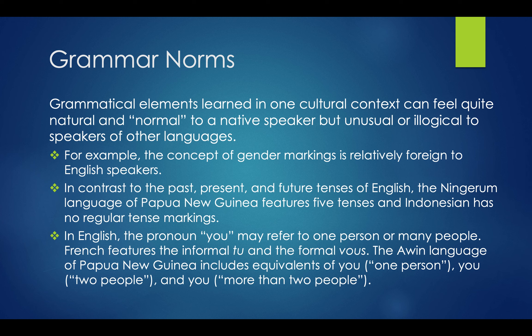In English, the pronoun 'you' may refer to one person or many. In French, there's informal 'tu' and formal 'vous.' The Alamblak language of Papua New Guinea includes equivalents of 'you' for one person, 'you' for two people, and 'you' for more than two people. In Spanish, it's 'tú' and 'usted.' These grammar rules apply not just to sentence structure but also to conjugating verbs and the pronouns used in particular contexts.